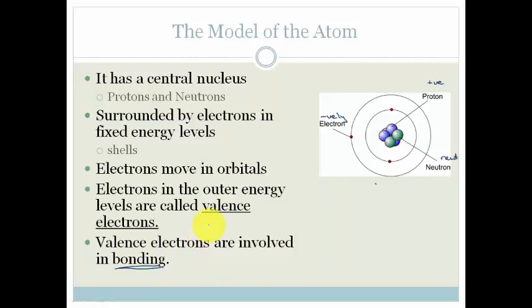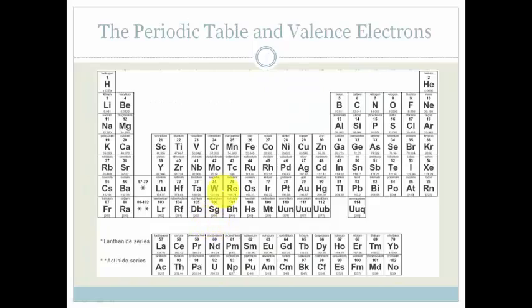So let's talk about the periodic table and how we can work out the number of valence electrons from the periodic table. The periodic table is divided up and sorted according to the number of protons and neutrons, but also according to the number of electrons. Everything in group 1 has got 1 electron in its outer shell.